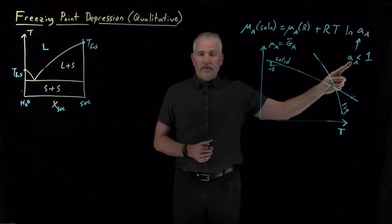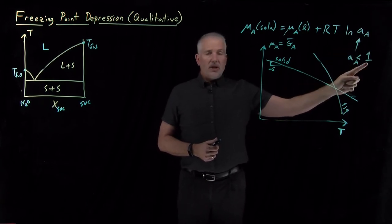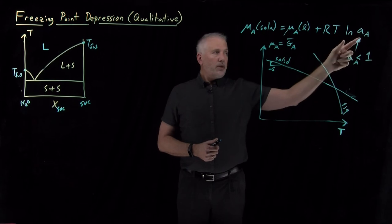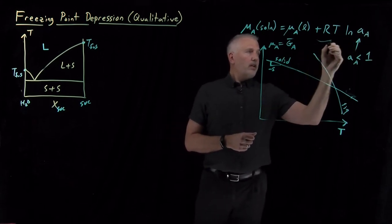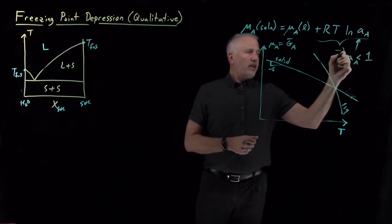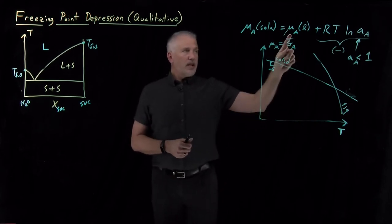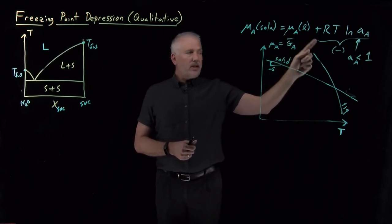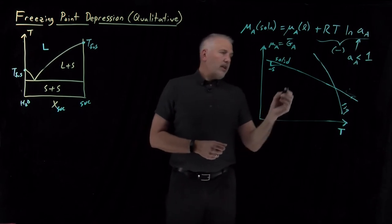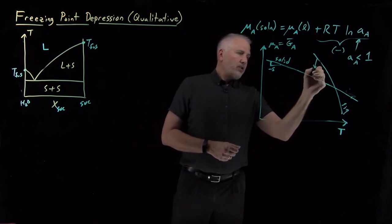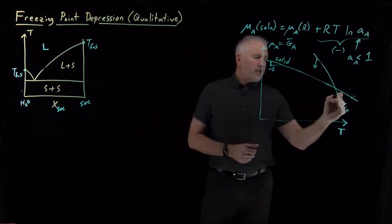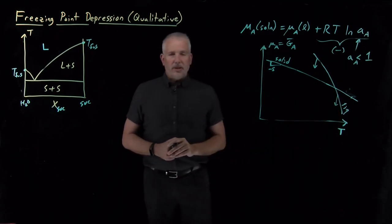In a solution, the activity will be less than one. It's less active than the pure solvent. So the log of that number that's less than one is going to be a negative number. So this entire quantity is negative. The thing that I'm adding to the chemical potential of the liquid is a negative number.